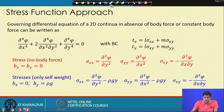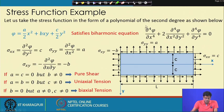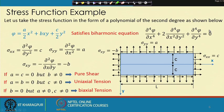We will now give some examples of stress functions. Consider a second-order polynomial as a stress function. Since the biharmonic equation is a fourth-order equation, any second-order polynomial will automatically satisfy it. In fact, any third-order polynomial will also satisfy this equation.